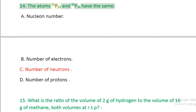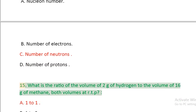Question 14: The atoms ³¹P₁₅ and ³²P₁₆ have the same: A. Nucleon number, B. Number of electrons, C. Number of neutrons, D. Number of protons.